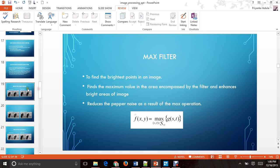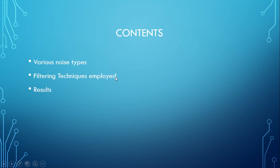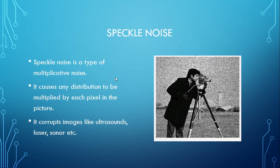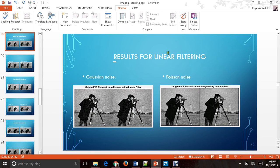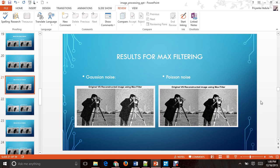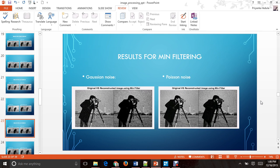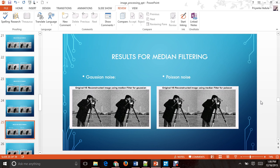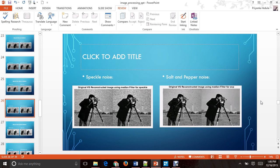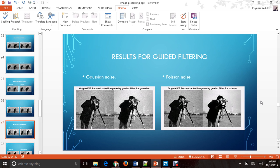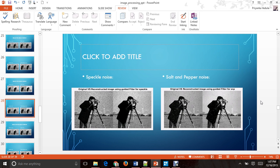Let's quickly go through the results again. The linear filter performs very well for Poisson noise. The max filter and min filter results are also shown. The median filter has worked very well for Poisson noise as well as salt and pepper noise, performing extremely well by removing all the noise completely with the picture looking sharp and appealing. The guided filter has done an exceptional job for Poisson noise — the best among all the filters for Poisson noise — and a good job for Gaussian noise, but not as well for speckle noise and salt and pepper noise.